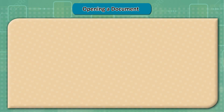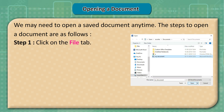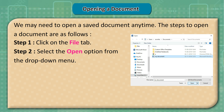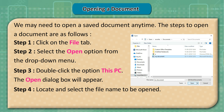Opening a Document: We may need to open a saved document anytime. Step 1: Click on the File tab. Step 2: Select the Open option from the drop-down menu. Step 3: Double-click This PC; the Open dialog box will appear. Step 4: Locate and select the file name to be opened. Step 5: Click the Open button.